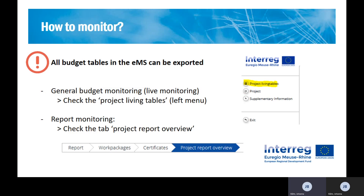How can you monitor this? A very helpful tool — not specific to the flexibility rule but still useful: as a lead partner you have access to the project living tables in the EMS, where you can see the live spending of submitted expenditure from your partners in the different work packages and on budget line level. You just go into the EMS in your project and find the project living tables in the left menu. If you are not a lead partner but a regular partner, you also have access to your own living tables, where you can check your spending and what is approved expenditure at partner level.